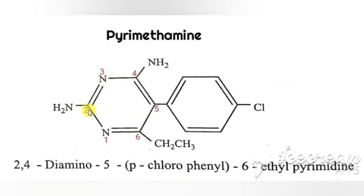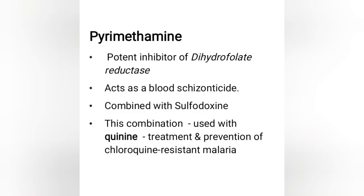Pyrimethamine has a pyrimidine nucleus — a six-membered heterocyclic ring with two nitrogens at positions 1 and 3. Amino groups are at the 2nd and 4th positions, a para-chlorophenyl at the 5th position, and ethyl at the 6th position. The chemical name is 2,4-diamino-5-(para-chlorophenyl)-6-ethyl pyrimidine. It is a potent inhibitor of dihydrofolate reductase, acts as a blood schizonticide, and is used in combination with sulfadoxine and quinine for treatment and prevention of chloroquine-resistant malaria.